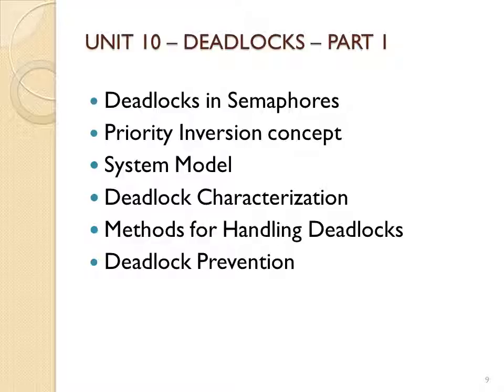In this section we talked about deadlocks and semaphores and how they can occur. We covered priority inversion — when a higher priority task is waiting on a lock held by a lower priority task. We discussed the system model with request, use, and release, and the methods for handling deadlocks: avoid or prevent, detect and recover, or ignore the problem. We also elaborated on deadlock prevention. In the next video we will talk about deadlock avoidance.